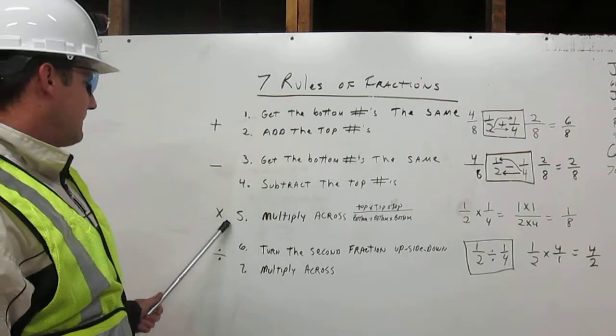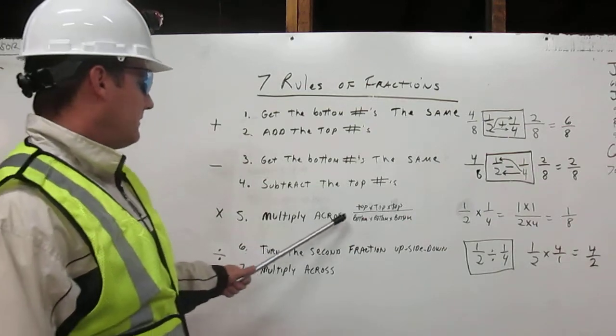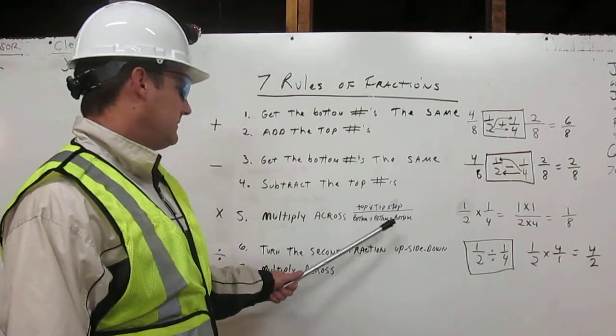Now, we are going to multiply. Number five. To multiply, you simply multiply across. Top times top, bottom times bottom.